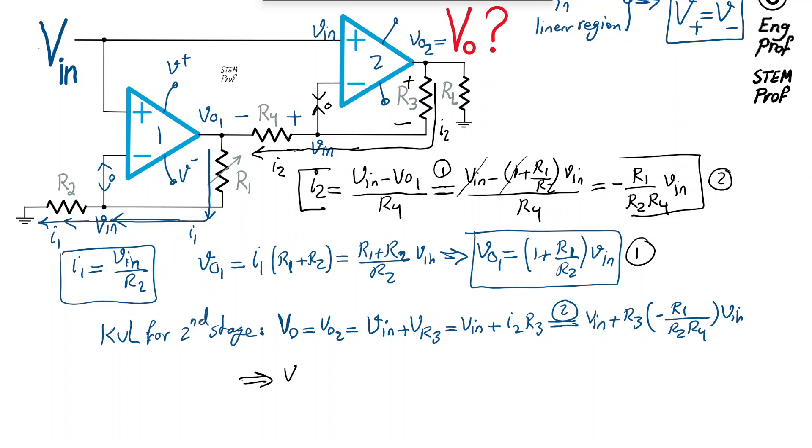If you take a look at this one, I can factor out V-in, and I have 1 minus R1 R3 divided by R2 R4 times V-in.